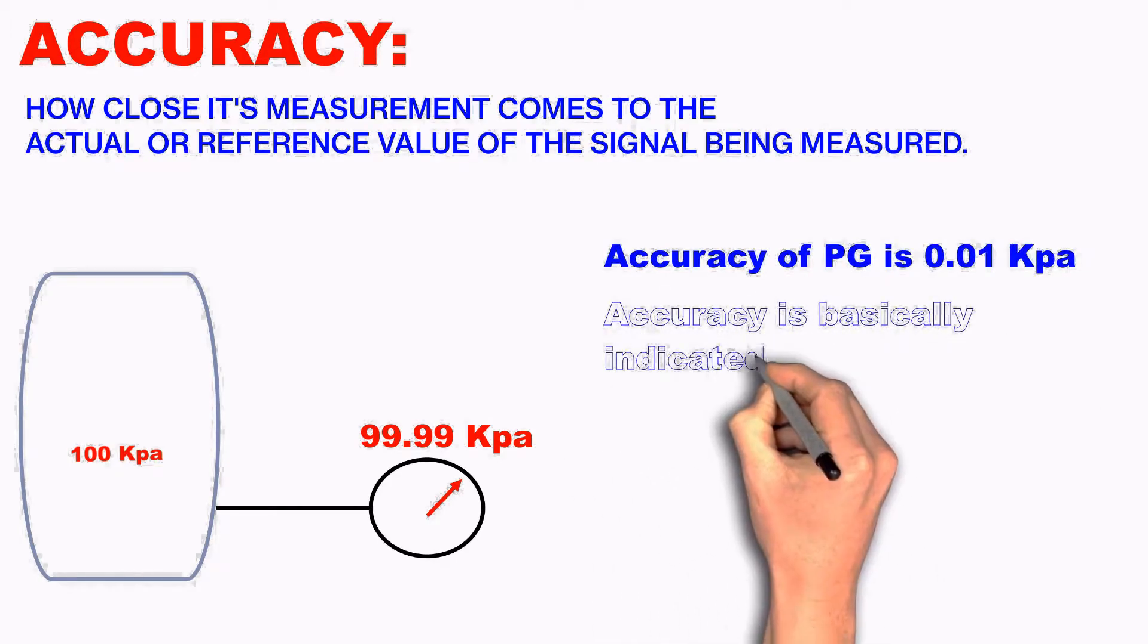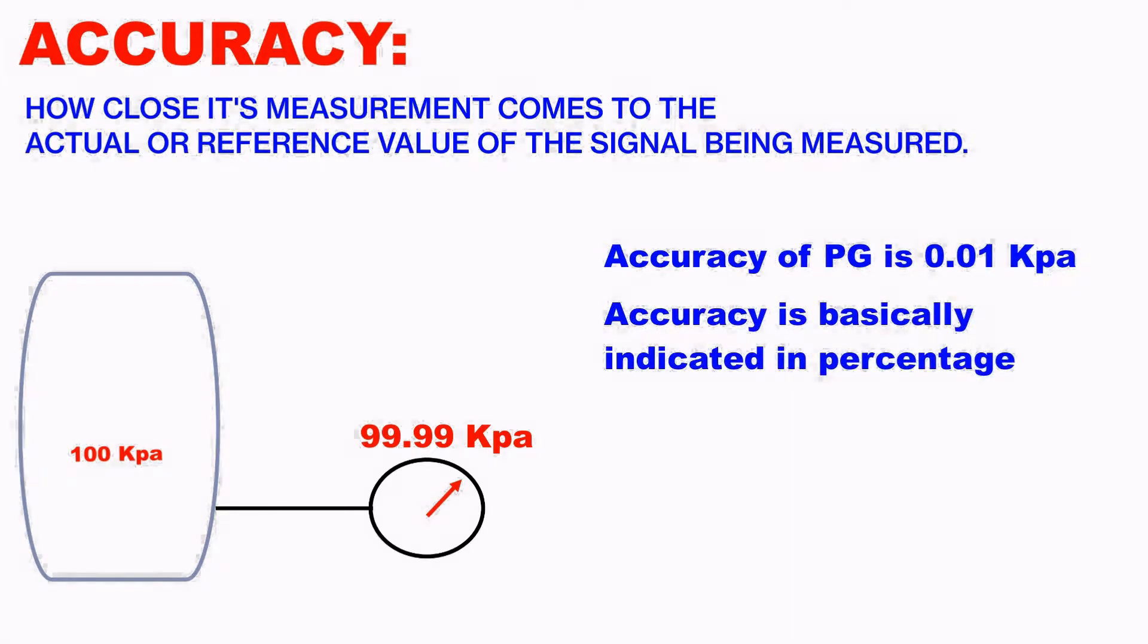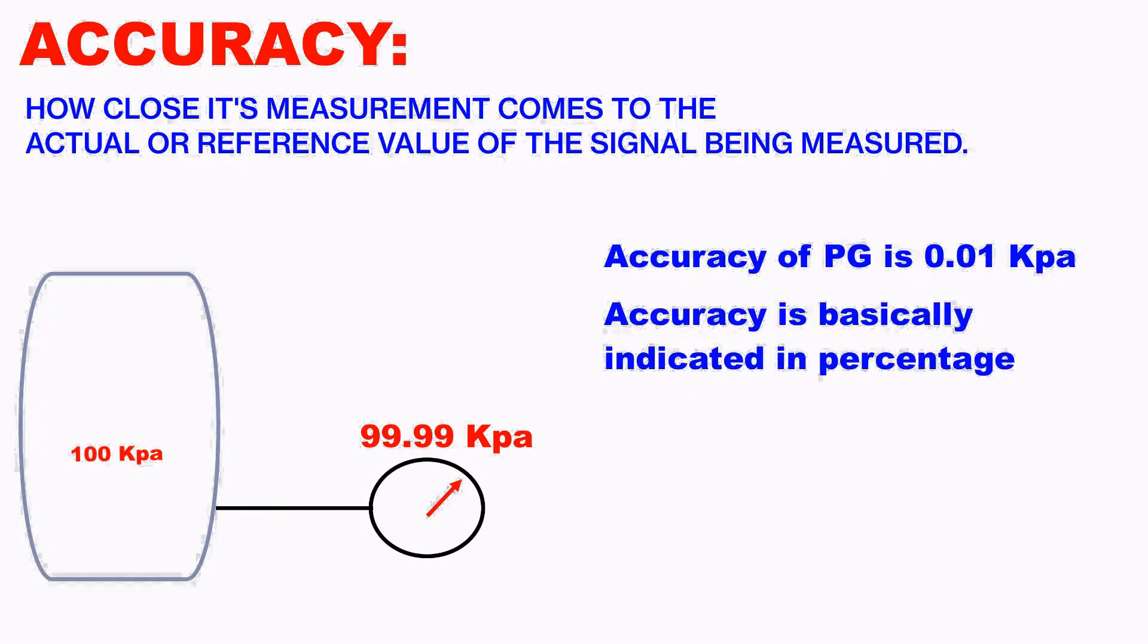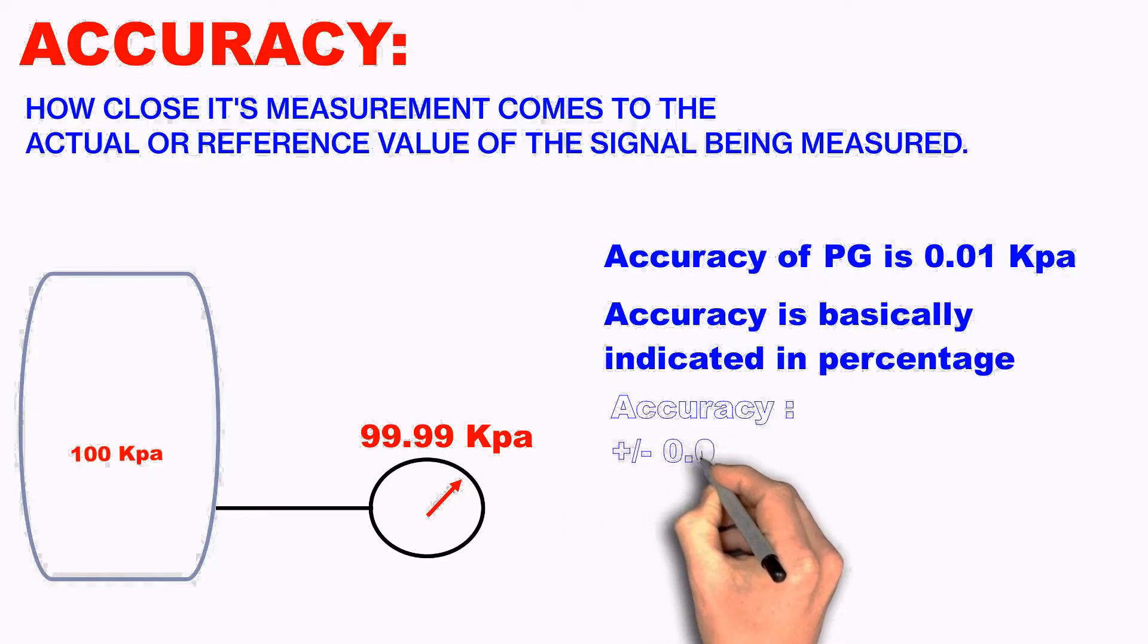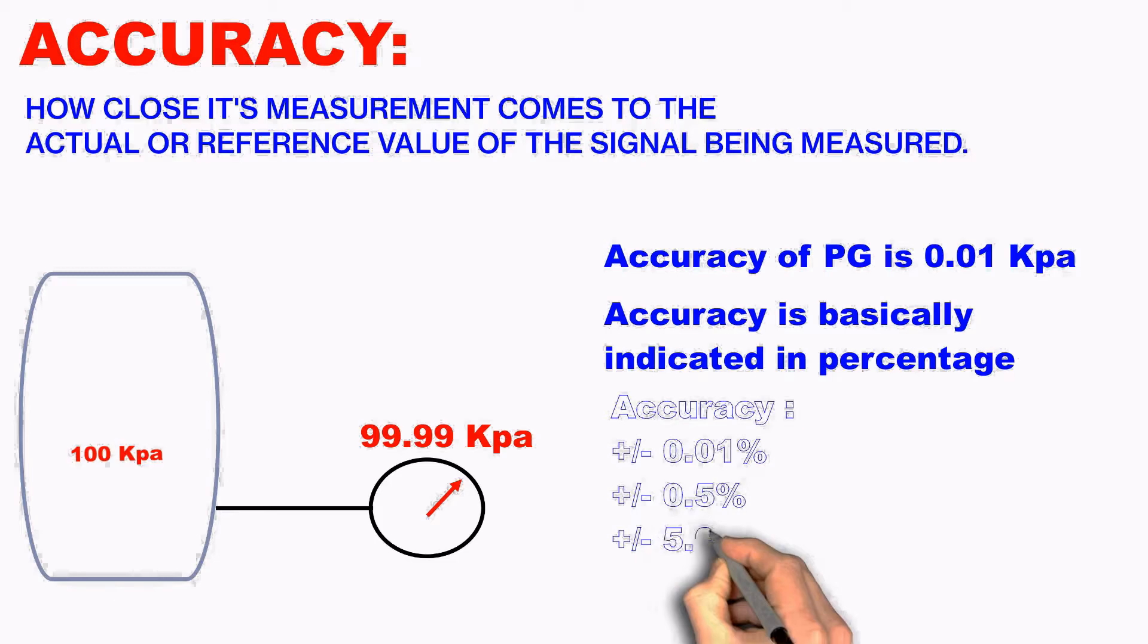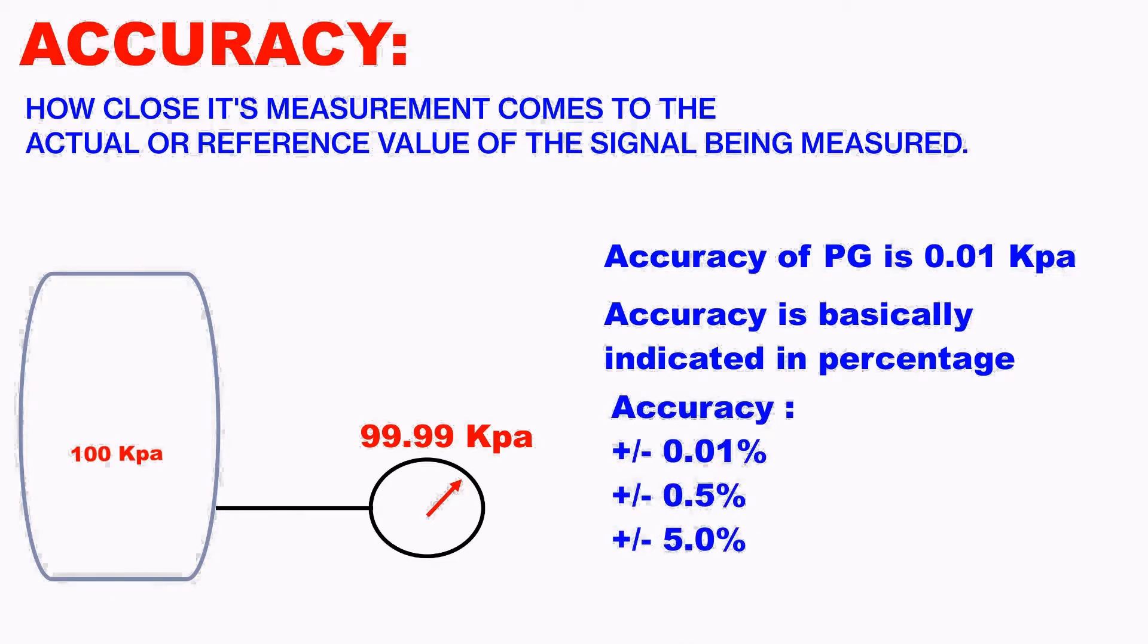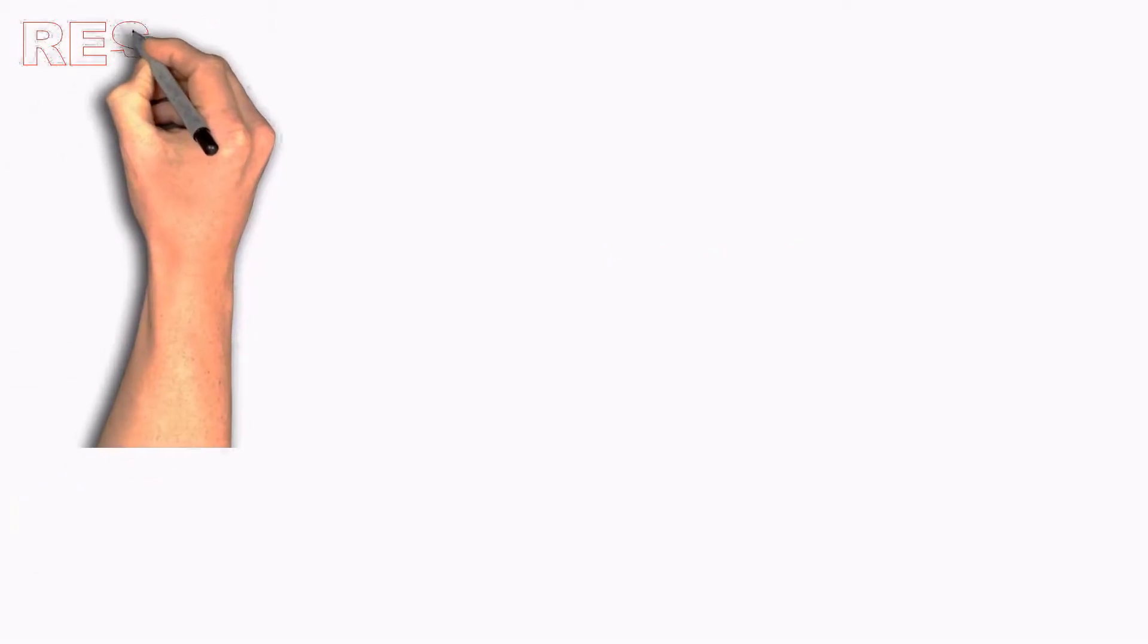So the accuracy level for 0 to 100 range is 0.01. Basically, accuracy is being indicated in percentage. Some of the equipments will come with a standard accuracy percentage like plus or minus 0.01%, plus or minus 1%, plus or minus even 5% is available. So this is the accuracy, and next let's see resolution.